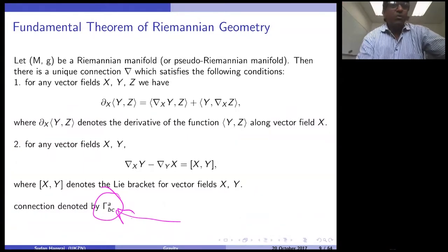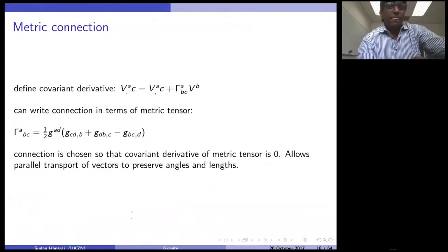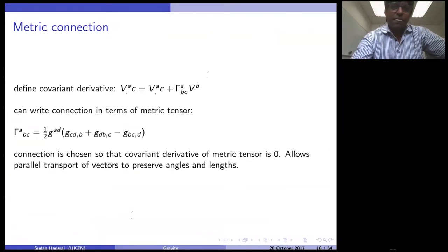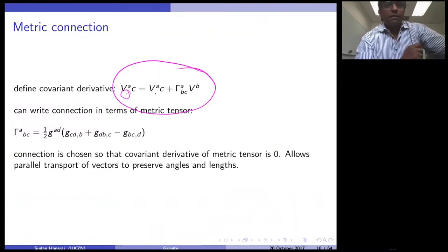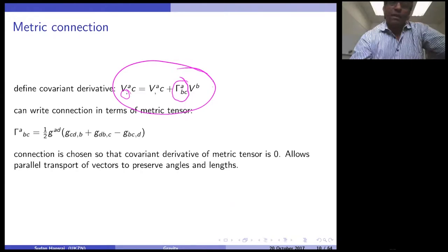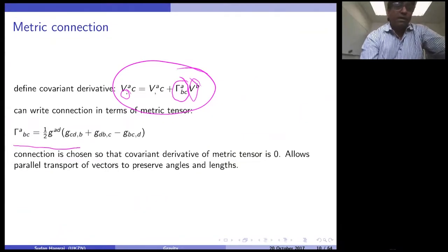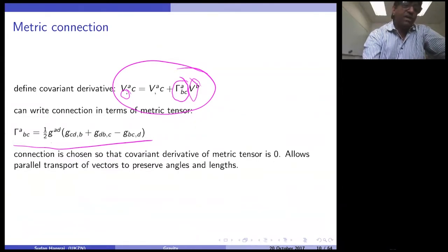Before I get to the metric connection itself, let me define the calculus we are going to be using. We define a process called the covariant derivative, denoted by a semicolon. V^A semicolon C is defined as V^A comma C — where comma means the ordinary partial derivative — plus Gamma^A_BC times V^B. The metric connection Gamma^A_BC allows us to perform parallel transport. We can write this metric connection in terms of the metric tensor: Gamma^A_BC equals one-half G^AD times the sum of partial derivatives of the metric components.